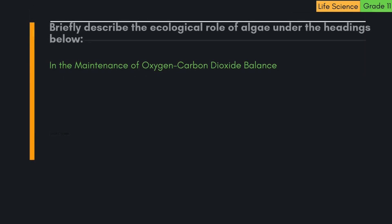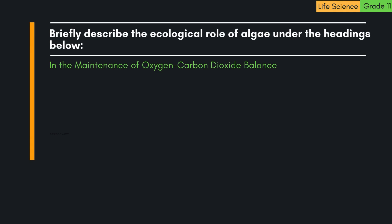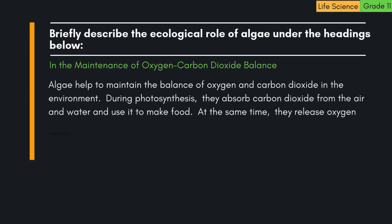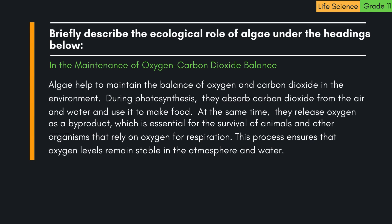B. In the maintenance of oxygen-carbon dioxide balance. Algae help to maintain the balance of oxygen and carbon dioxide in the environment. During photosynthesis, they absorb carbon dioxide from the air and water and use it to make food. At the same time, they release oxygen as a by-product, which is essential for the survival of animals and other organisms that rely on oxygen for respiration. This process ensures that oxygen levels remain stable in the atmosphere and water.